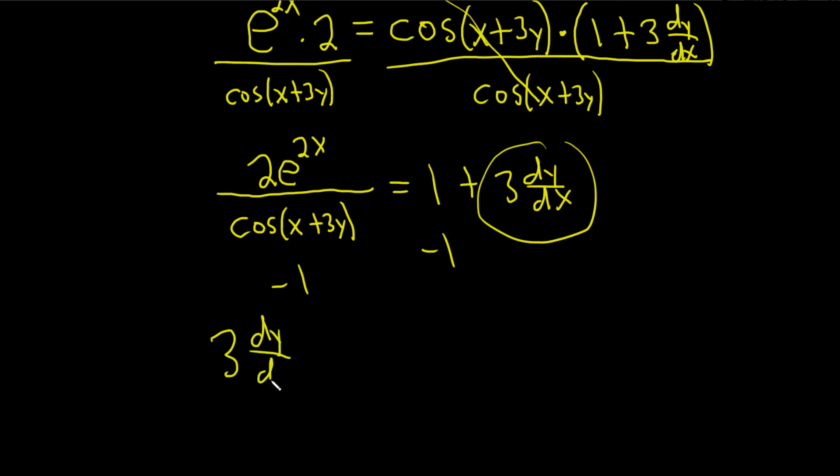So 3 dy/dx equals 2e^(2x) over cosine of x plus 3y, then minus 1.